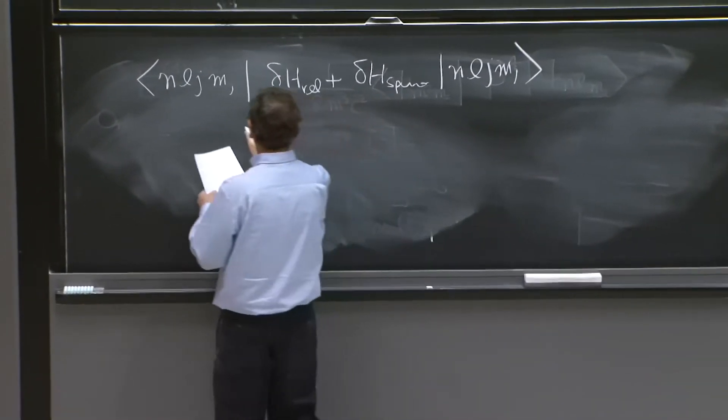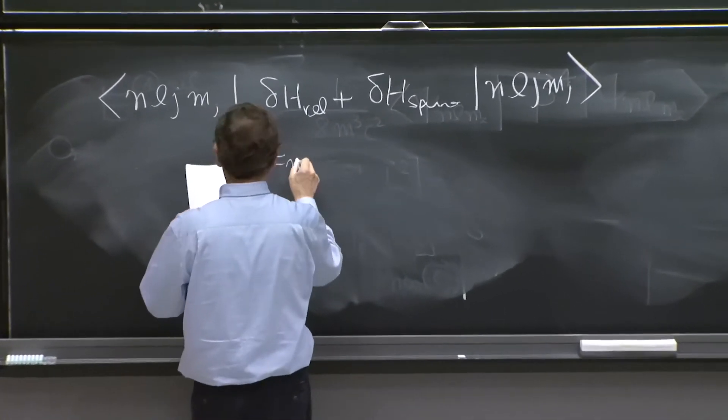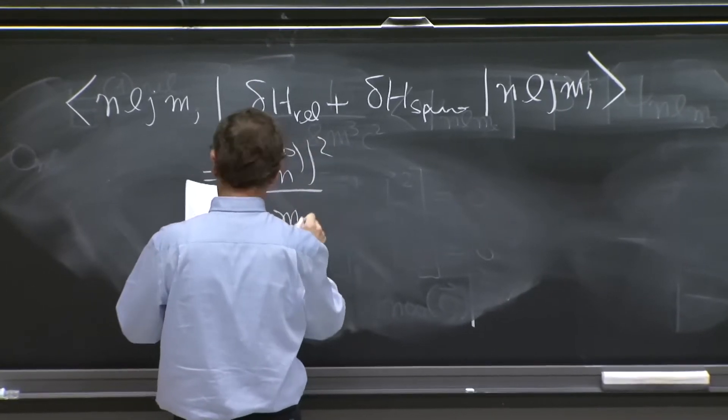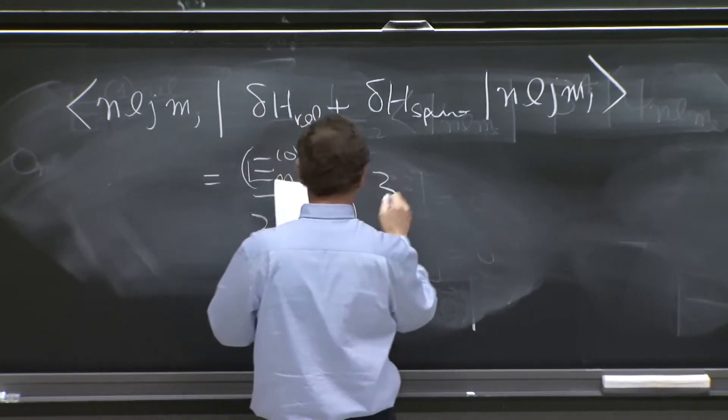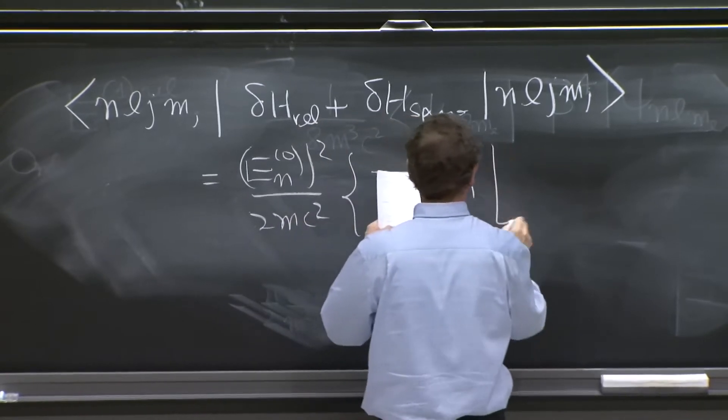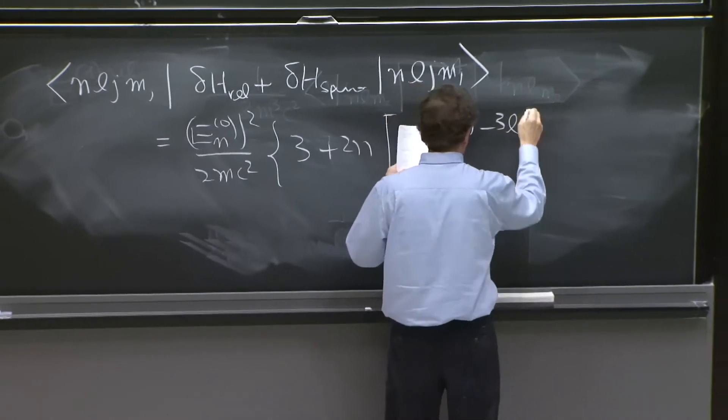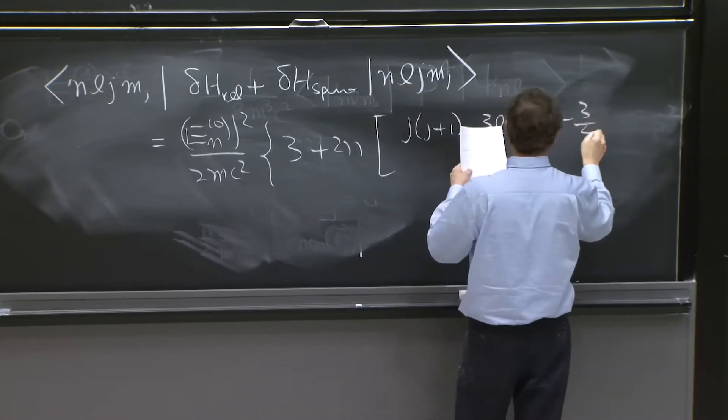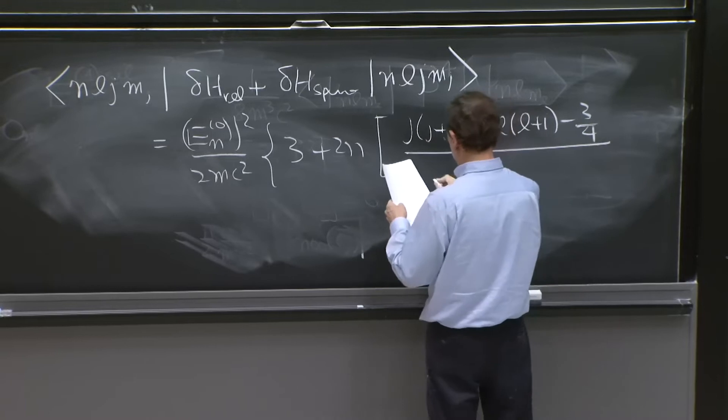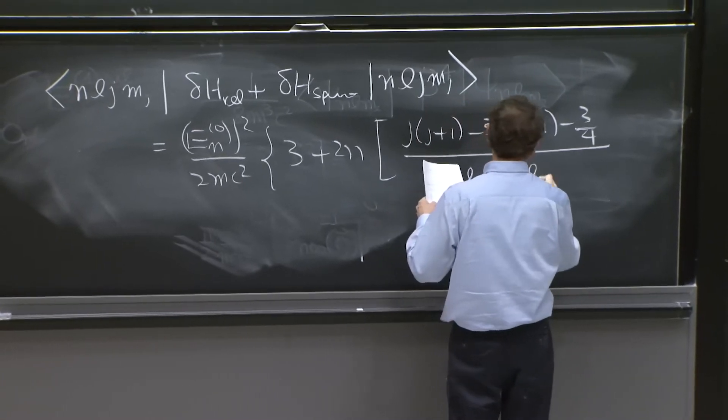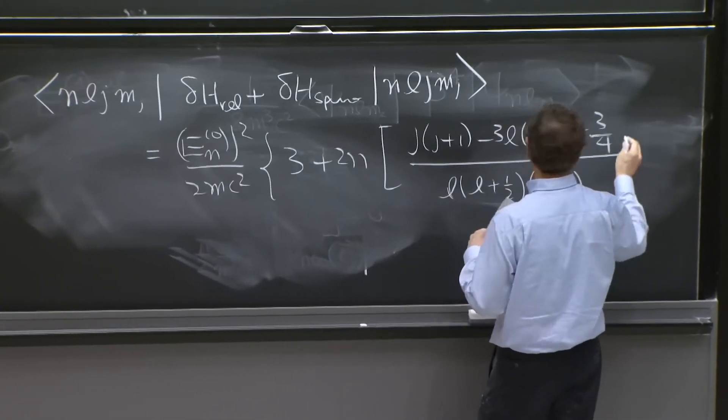And you get en0 squared over 2mc squared, 3 plus 2n j j plus 1 minus 3l. Now, l plus 1 minus 3 quarters over l, l plus 1 half, l plus 1. A little messy.